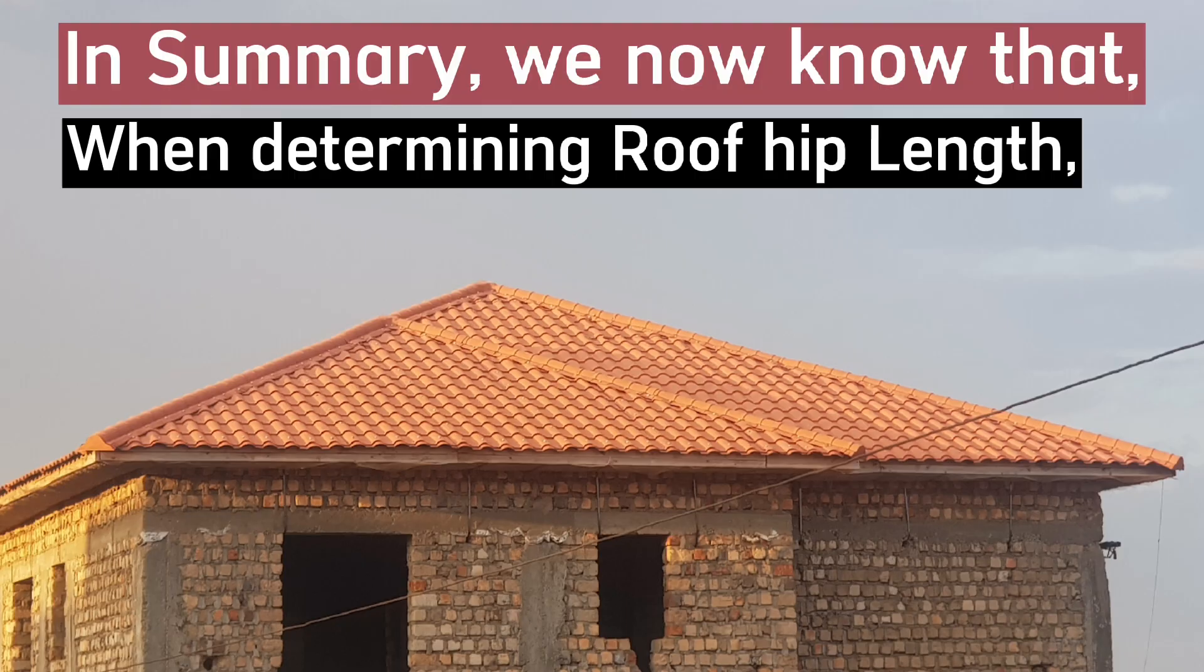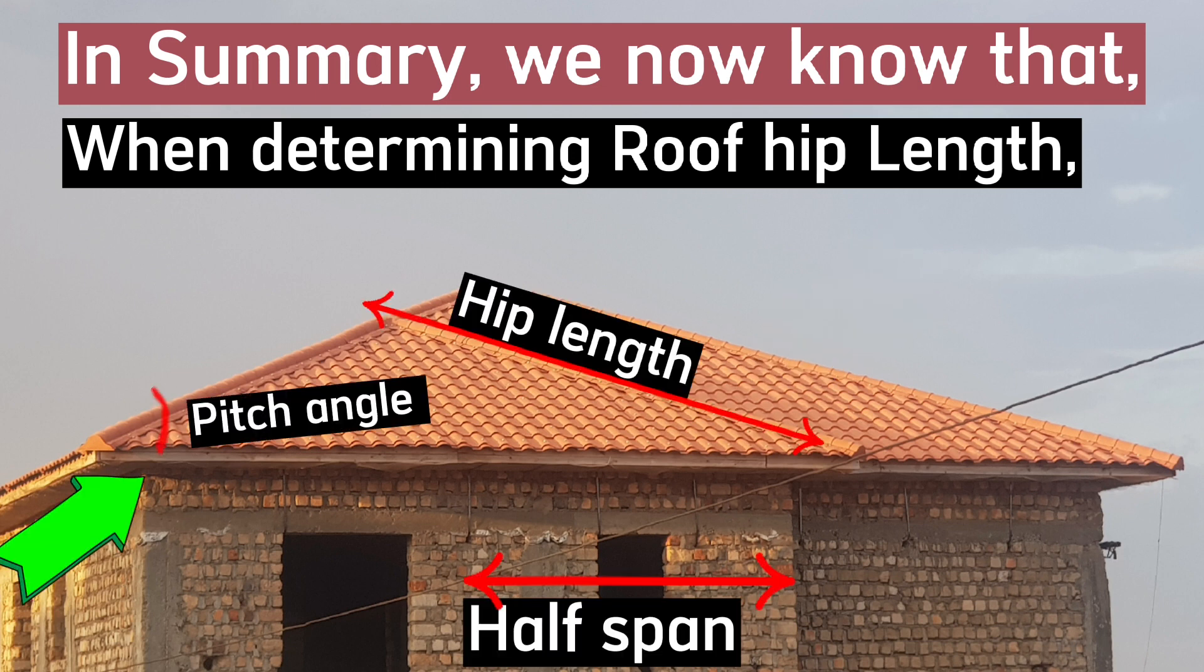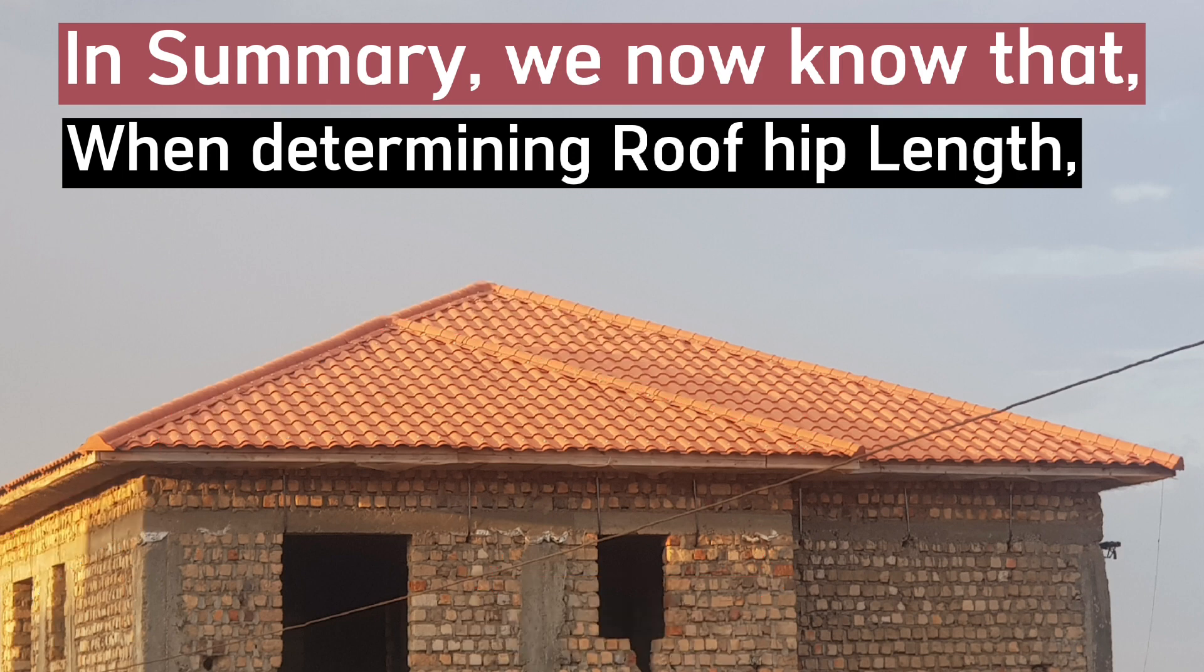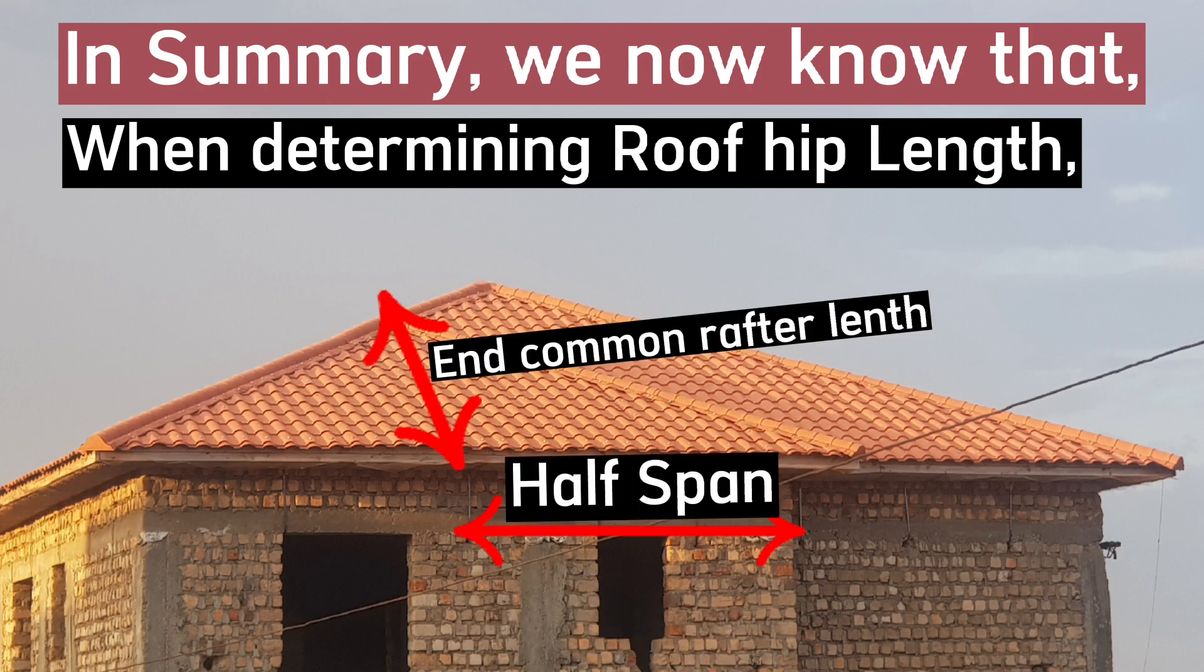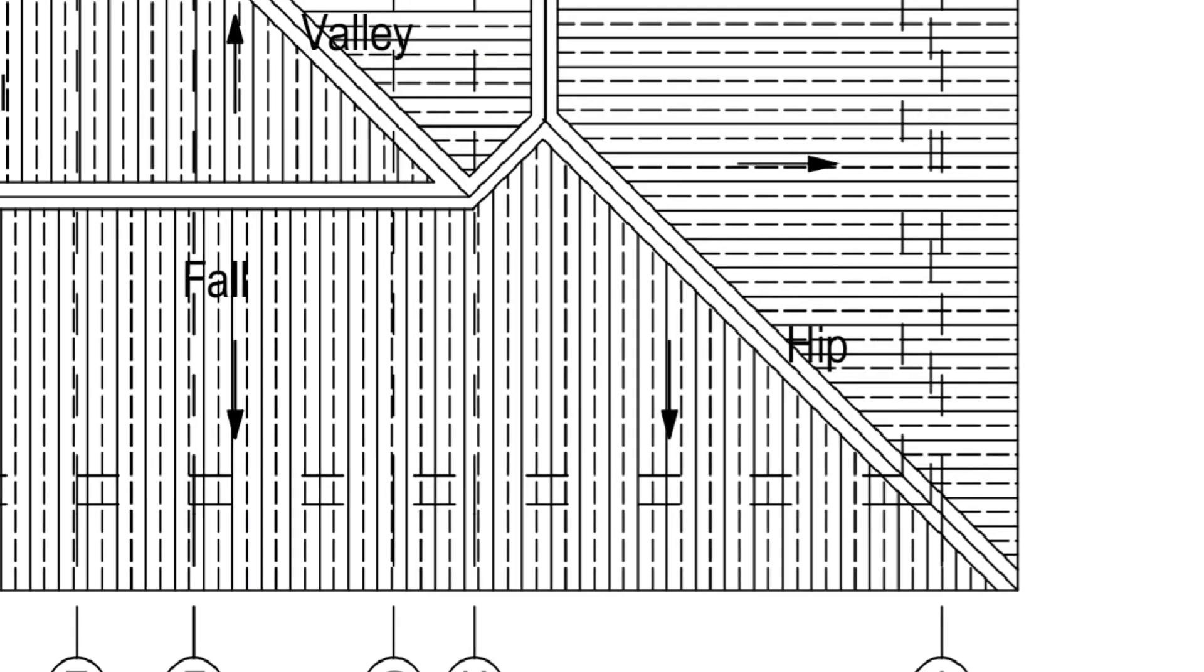Remember to add overhang length if needed. In summary, when determining roof hip length, we can either use the half span and pitch angle, or we can use the rafter length and half span. We used both methods and got 4 meters as the hip length. That's the end of today's video.